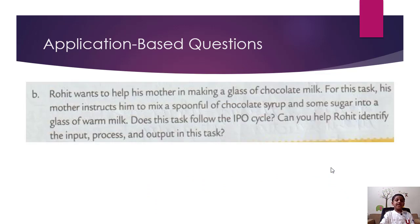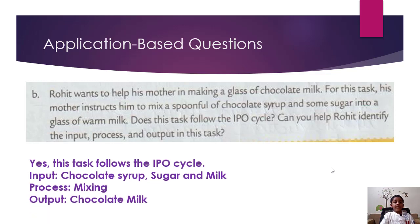Application based questions B. Rohit wants to help his mother in making a glass of chocolate milk. For this task, his mother instructs him to mix a spoonful of chocolate syrup and some sugar into a glass of warm milk. Does this task follow the IPO cycle? Can you help Rohit identify the input, process, and output in this task? Yes, this task follows the IPO cycle. Input is the chocolate syrup, sugar, and milk. The process is mixing, and the output is chocolate milk.